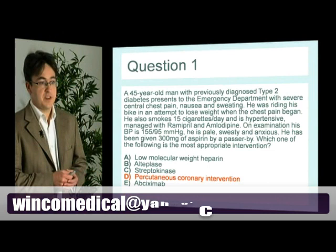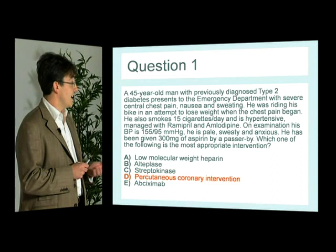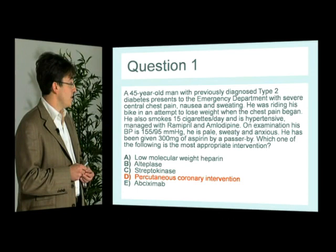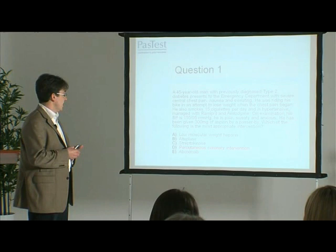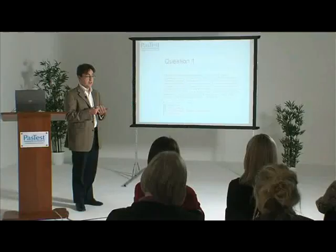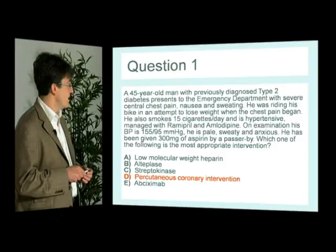This man is presenting with clear symptoms of an acute myocardial infarction. He has risk factors for coronary artery disease including smoking, diabetes and hypertension. There is good evidence to support primary PCI — primary percutaneous coronary intervention — as the gold standard for treatment. Whereas previously we may have elected for thrombolysis with agents such as alteplase or streptokinase, we now know primary PCI is best, resulting in less heart failure and improved survival.